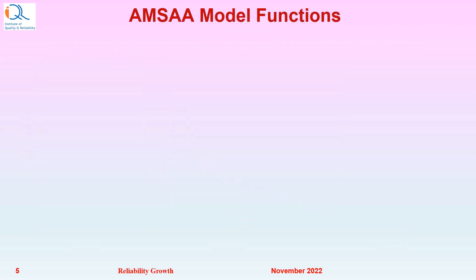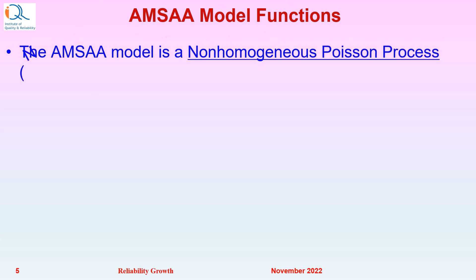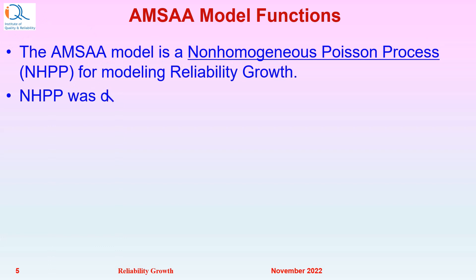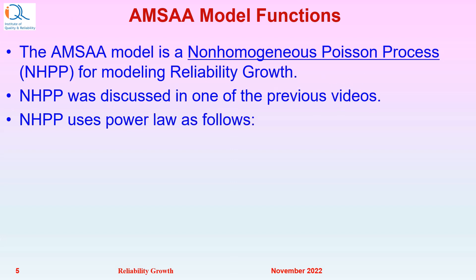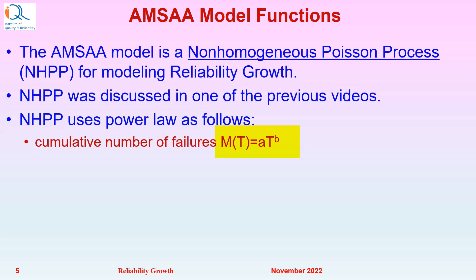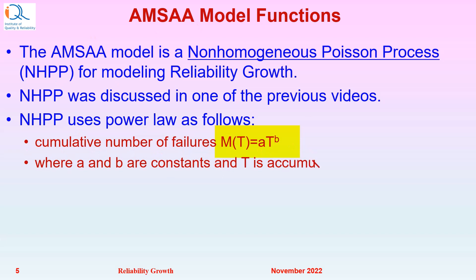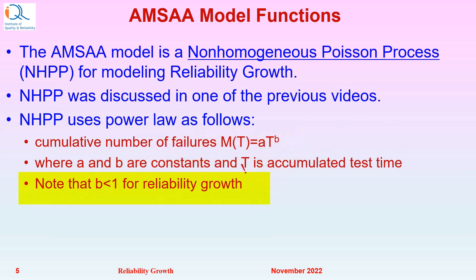The AMSA model is a Non-Homogeneous Poisson Process, NHPP, for modeling reliability growth. NHPP was discussed in one of our previous videos. NHPP uses the power law as follows: the cumulative number of failures, capital M of T, is equal to A times T raised to B, where A and B are constants and T is the accumulated test time. Note that B must be less than 1 for positive reliability growth.